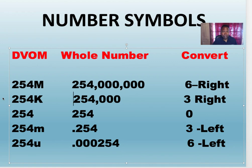Now 254K, you move it three places to the right. Keep in mind the decimal is after the four, so K means kilo, three places to the right. So the decimal would have been here: one, two, three. Two hundred fifty-four thousand is the whole number.